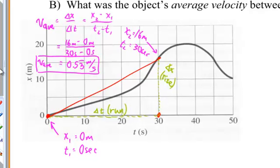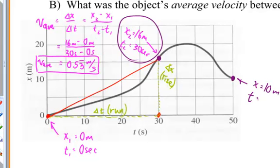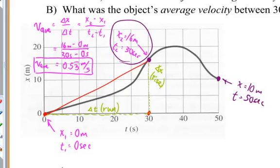Part B, what was the object's average velocity between 30 seconds and 50 seconds? Well, I'm going to play the same game now. I'm going to find these two points and then do the same thing with the data. My starting point for this time interval is the same as the ending point for the other one. Now, I go to 50 seconds and I find here that at 50 seconds, the position was 10 meters. The time here is now 50 seconds. So, now I'm going to feed that into my definition of the average velocity.